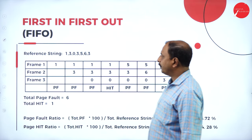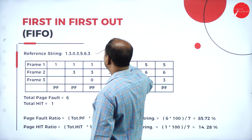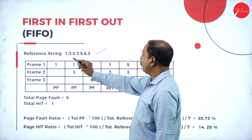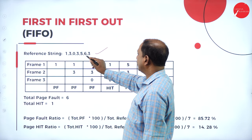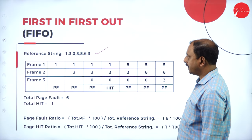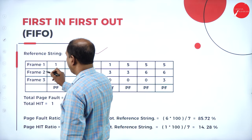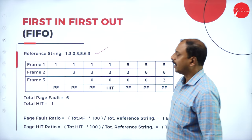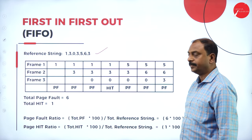Let us look at an example. Here the reference string is 1, 3, 0, 3, 5, 6, 3, and there are three frames: frame one, frame two, and frame three. We will see how replacement takes place in the FIFO algorithm.